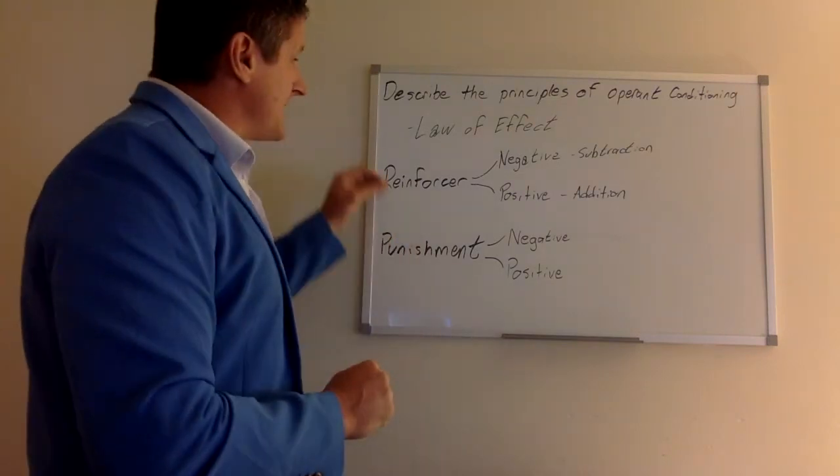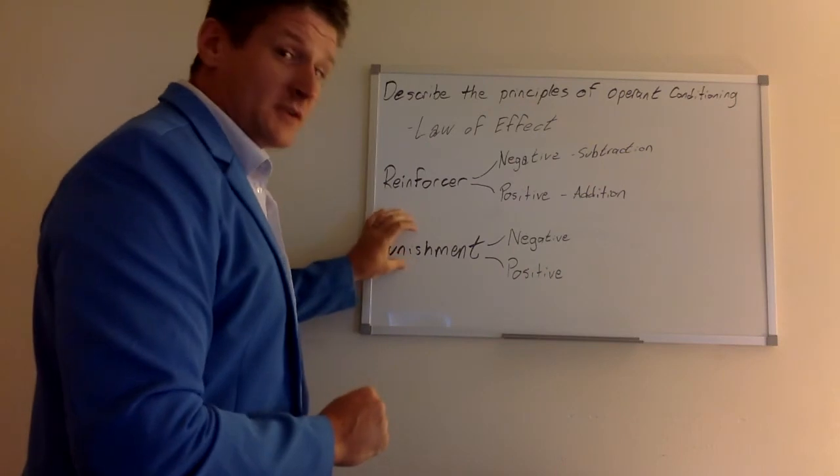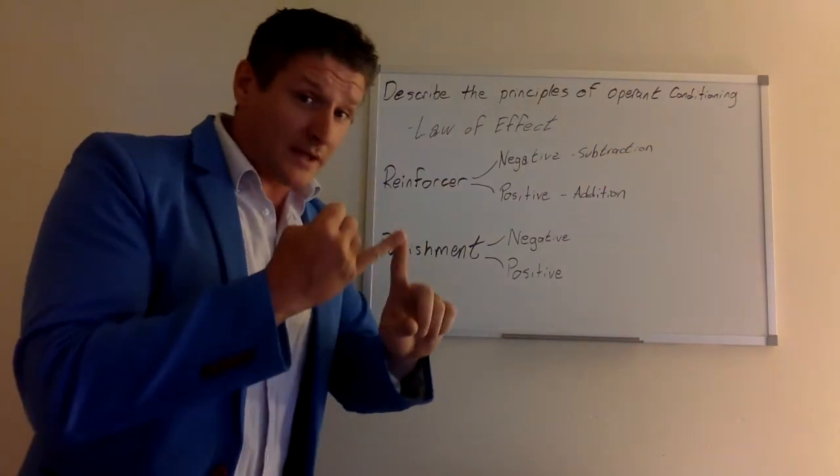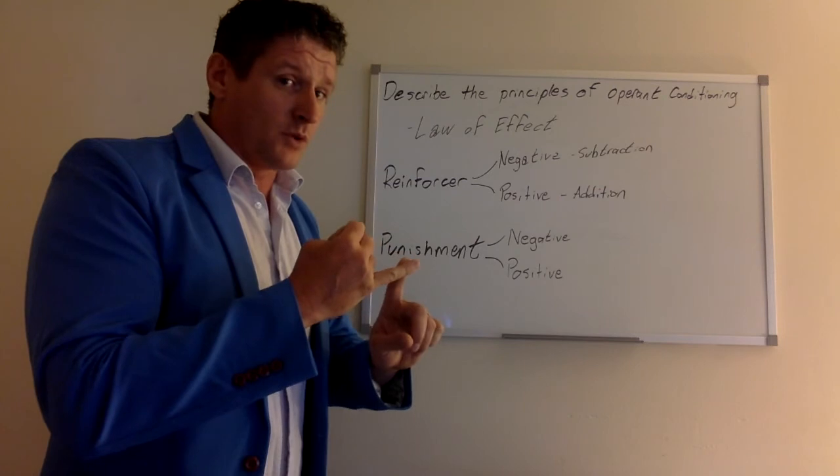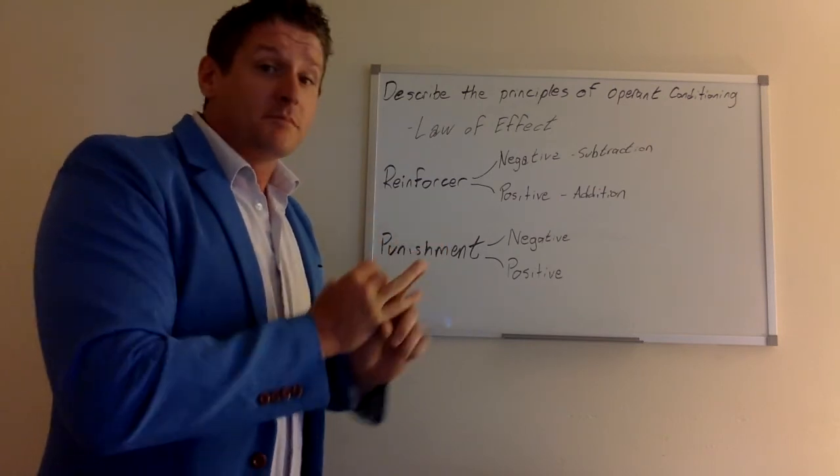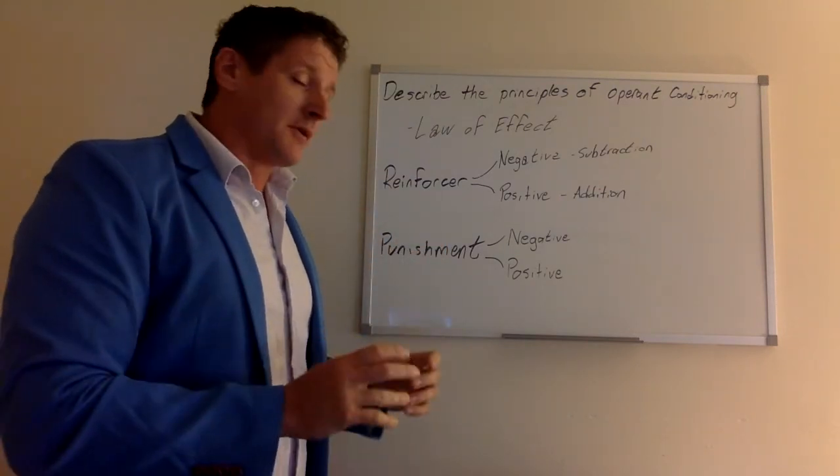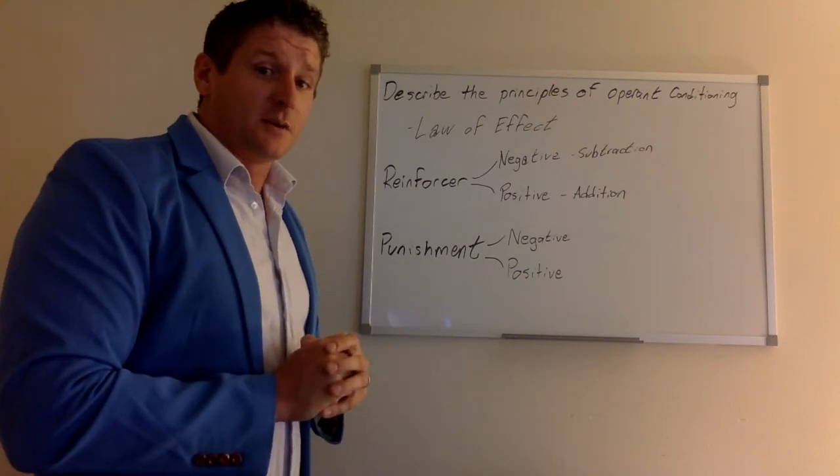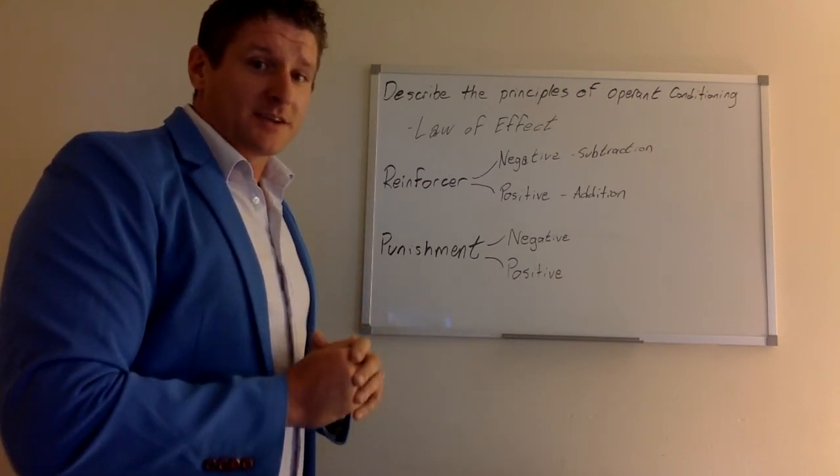If we understand that there are reinforcers, that there is punishment, and that these are used to strengthen a behavior, making it more likely, or weaken a behavior, make a behavior less likely, then we have a pretty good handle on the fundamentals that we're looking at in operant conditioning.